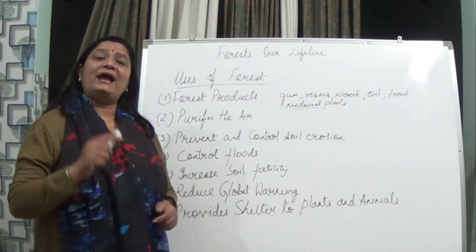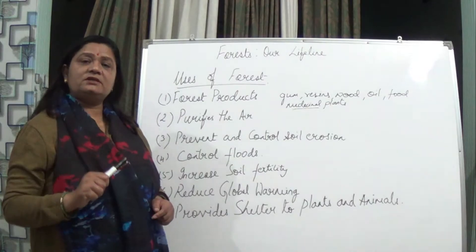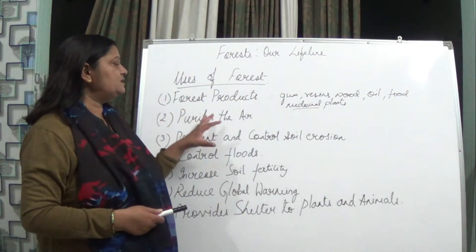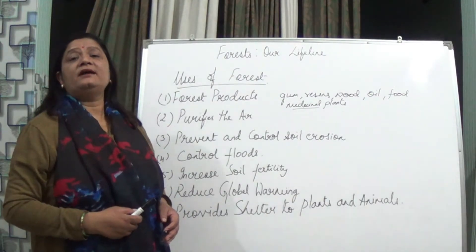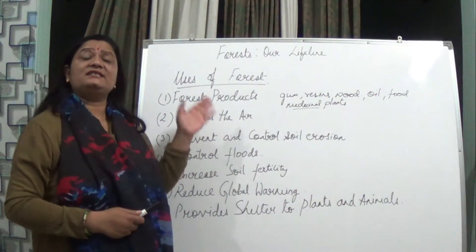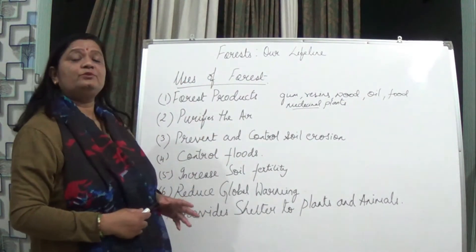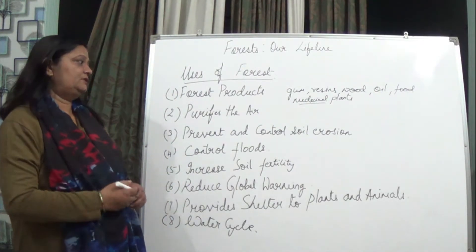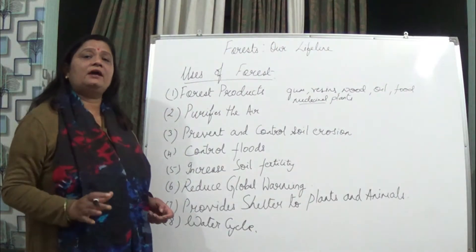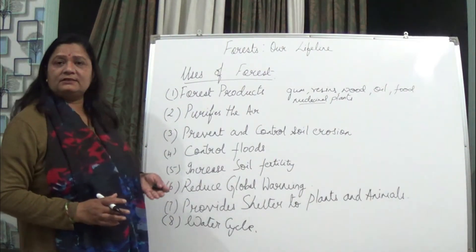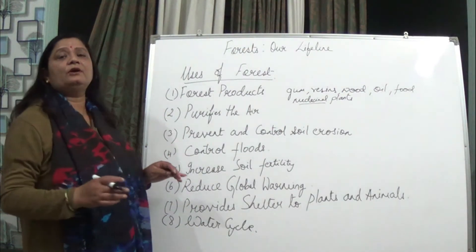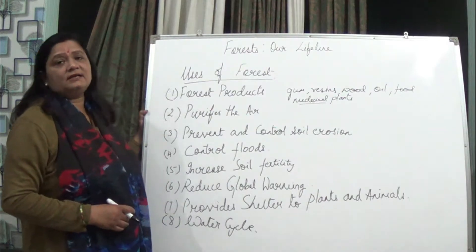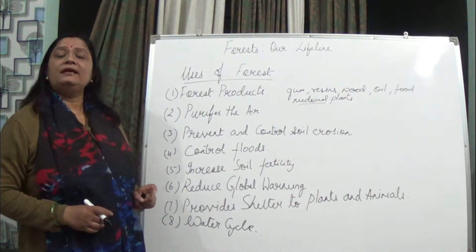Plants also, during respiration, take in oxygen and give out carbon dioxide. But the rate of photosynthesis is more than the rate of respiration — in photosynthesis, more carbon dioxide is utilized. As a result, it is adding oxygen to the air and purifying it, thereby acting as the lungs. These forests are also known as the green lungs of nature, because plants are green and they purify the air by adding oxygen to it.